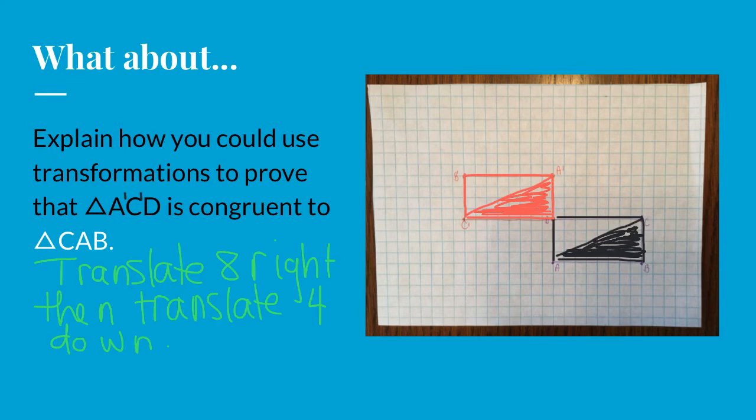So first what I thought of is I thought that we could take this red triangle and move it eight to the right, and then move it four down. And that would put the red triangle directly on top of the black triangle, and I thought I was good.